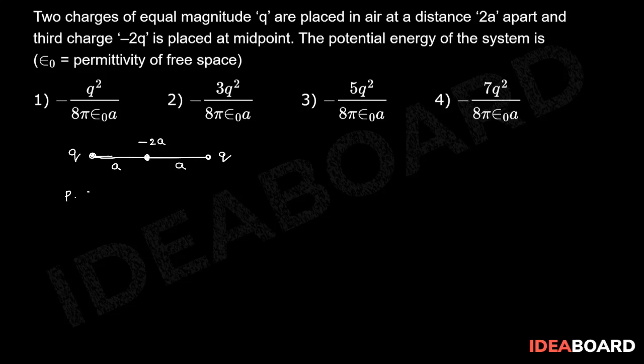Now the potential energy of the system is equal to 1 by 4 pi epsilon_0 into minus 2Q squared by A into 2, plus Q squared by 2A.